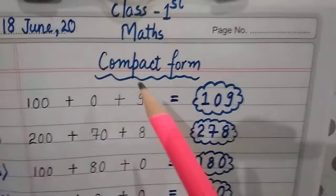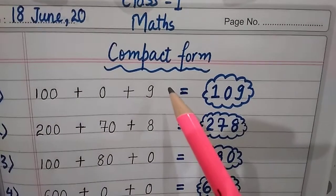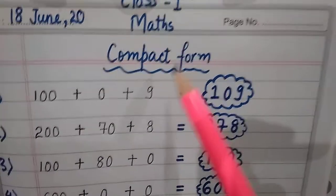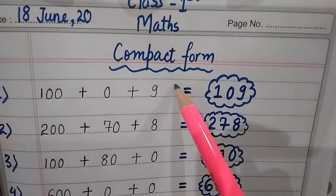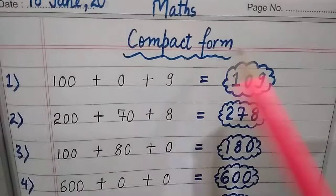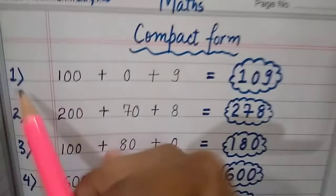We have done the chapter of understanding numbers. We have done the expanded form and compact form. So we will do the compact form. We have already done the compact form. We have to write it in the notebook. So what do you have to do in the compact form? What does compact form mean?